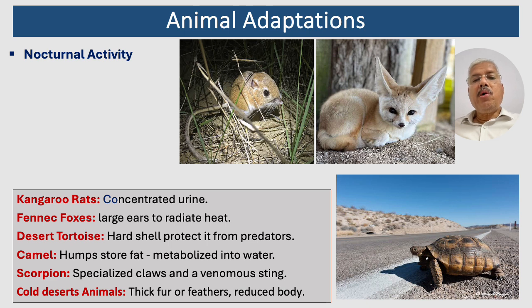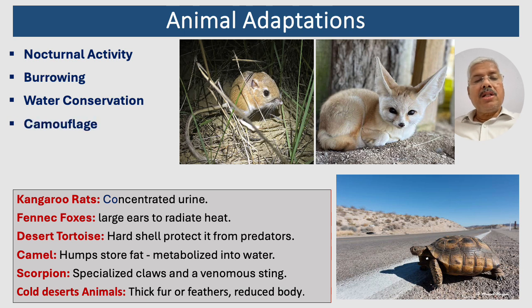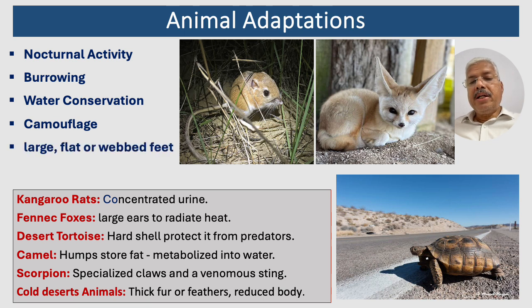Animals in desert biomes have evolved a variety of adaptations to survive in the harsh conditions of arid environments. These adaptations help them conserve water, tolerate extreme temperatures, and find food and shelter. Many desert animals are nocturnal, active at night to avoid the heat of the day. Animals can burrow underground to escape the heat and find cooler temperatures. Desert animals have evolved efficient ways to conserve water, such as producing concentrated urine, obtaining most of their water from food, and having thick skins to reduce water loss. Some animals have developed camouflage to blend in with their surroundings, helping them avoid predators or prey. Many desert animals have specialized feet, like large flat feet for walking on sand or webbed feet for swimming in oases.